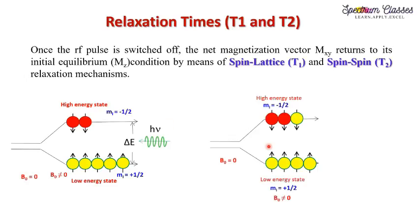When we switch off this radio frequency pulse, the nuclei will lose their excess energy in a non-radiative manner in NMR spectroscopy and go back to their original state — this is called the relaxation phenomena. This can be explained in two ways, with two time constants: one is T1 and the other is T2.